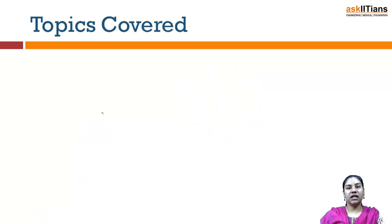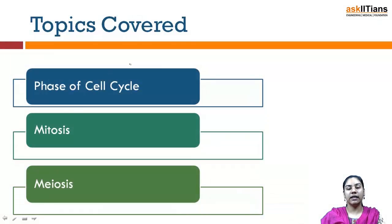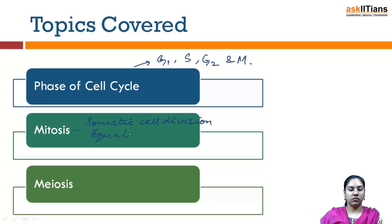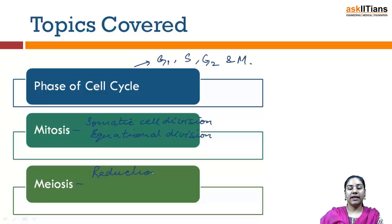The topics we will be covering under this chapter include the phases of the cell cycle, which include G1, S, G2, and M phase. Then there is mitosis, also known as somatic cell division or equational division. The last topic will be meiosis, known as reduction division, which takes place in the germ cells of our body.